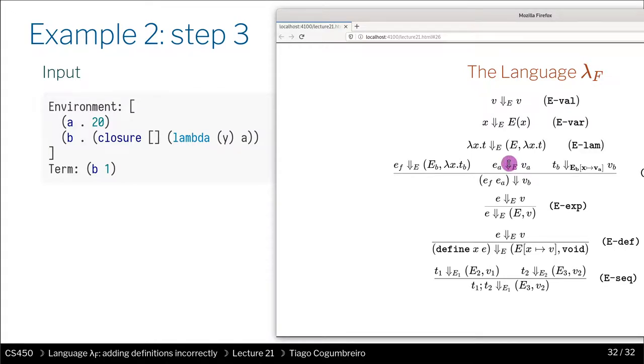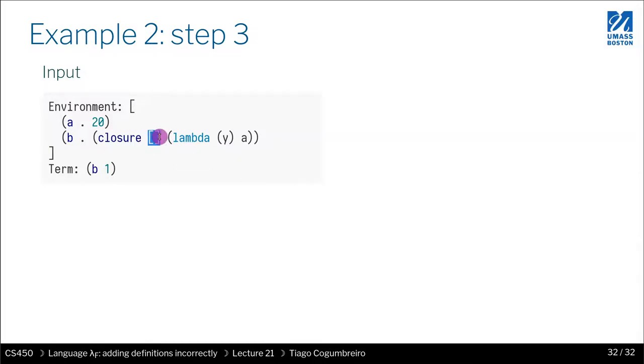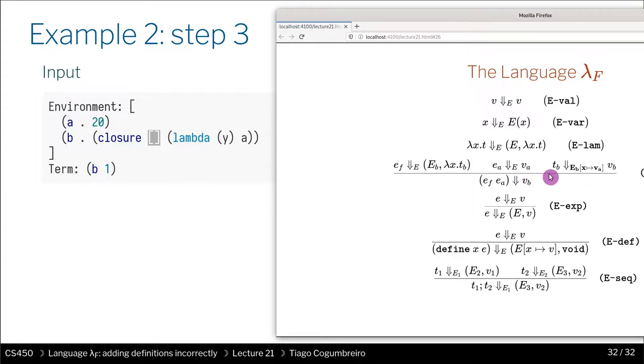And finally, what we're going to do is we're going to take the body of the lambda, which is A, and we're going to evaluate that with the new environment. What is the environment? It's the environment of B, so therefore it's this empty environment. E of B is going to be the one from the closure, so it's going to be this environment, where we assign Y to one, because we pass one as the argument. So we're going to replace the parameter y with the argument one. And what we're doing is we're looking up B. But note that B is not defined in the environment.